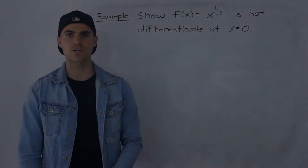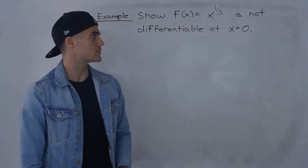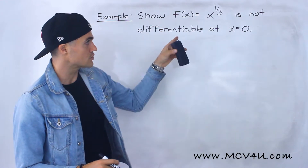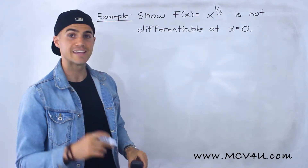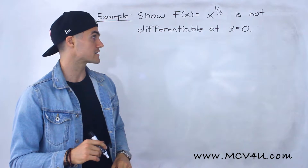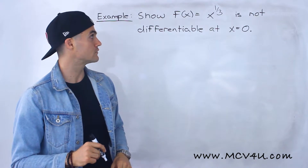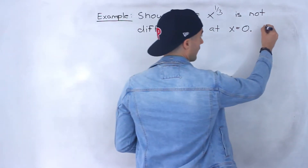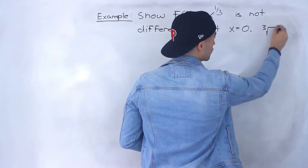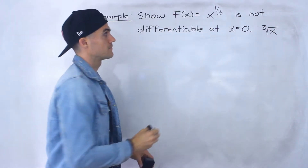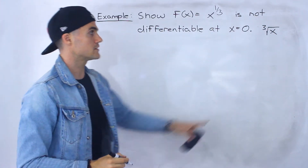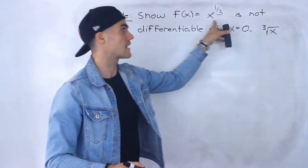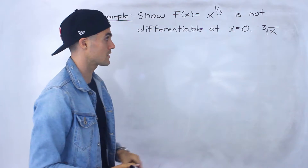Welcome back, Patrick here. Moving on to another example dealing with differentiability. We have to show that the function x to the power 1/3 is not differentiable at x = 0. Note that x to the power 1/3 is the exact same as the cube root of x — you may see this function written either way, and these two expressions are the exact same thing.